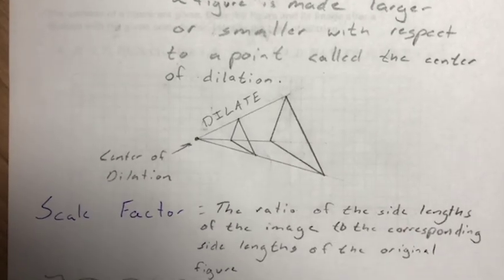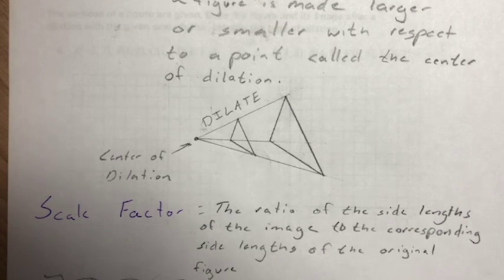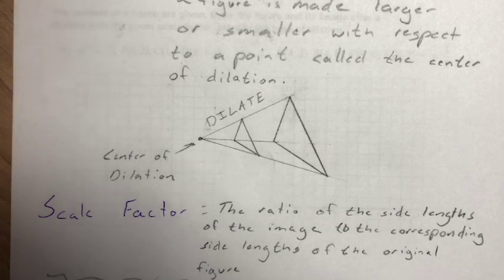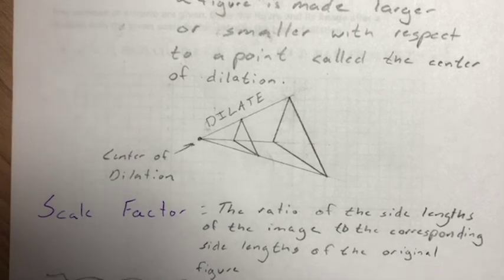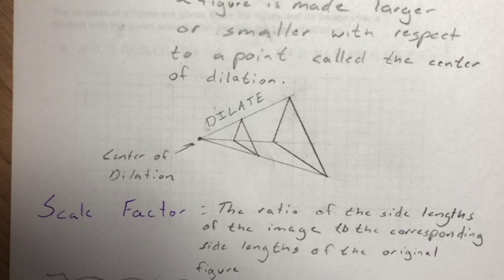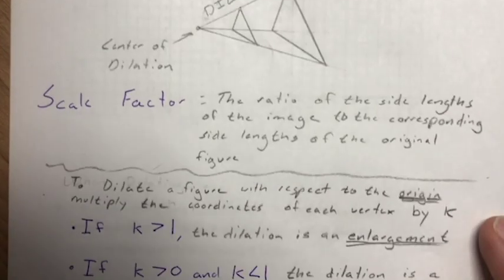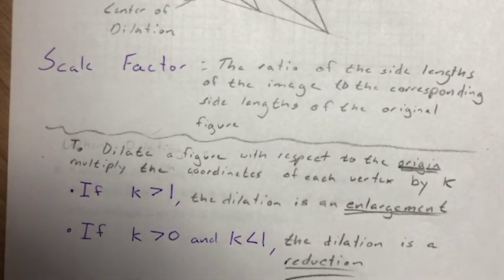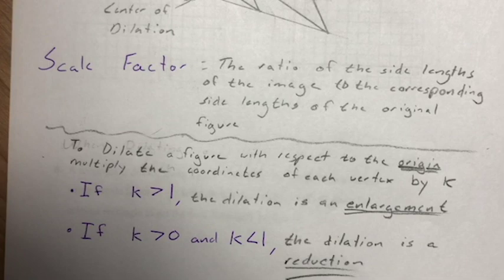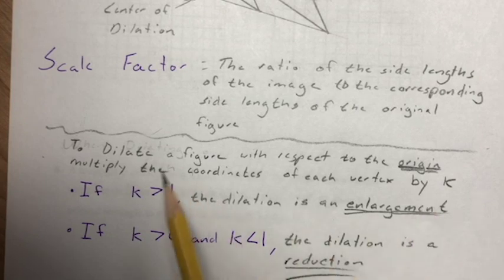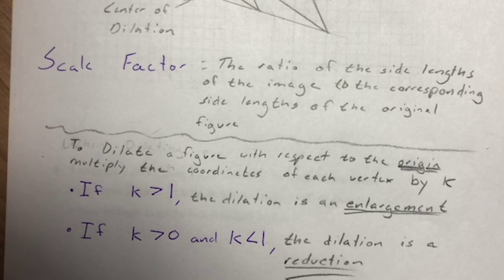There's something called a scale factor — it's the ratio of the side lengths of the image to the corresponding side lengths of the original figure. We've already been doing this with similar figures, finding the ratio. Lastly, we're only going to be concerned about dilating a figure with respect to the origin (0, 0) on the coordinate plane. All we have to do is multiply the coordinates of each vertex by k, the scale factor.